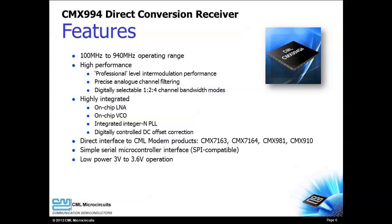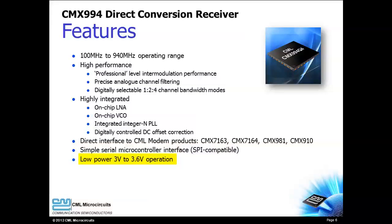Some RF devices are optimized for specific cellular bands, but the CMX994 supports a wide frequency range and provides high performance for mission critical applications. The on-chip LNA, VCO, synthesizer, and DC offset correction are just a few examples of the integration provided by the CMX994. The CMX994 can work with any baseband signal source and is directly compatible with other CML modems. A simple SPI compatible interface makes configuration straightforward and the CMX994 supports low voltage operation.